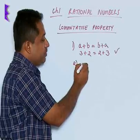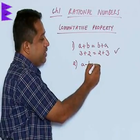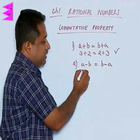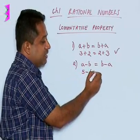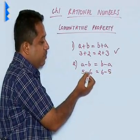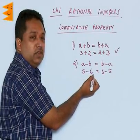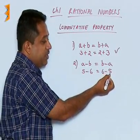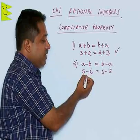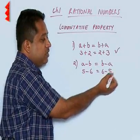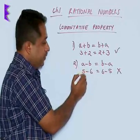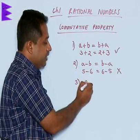If we look at the case of subtraction, is A minus B the same as B minus A? Let us take the example: is 5 minus 6 the same as 6 minus 5? The answer is no, because 5 minus 6 gives minus 1, whereas 6 minus 5 gives positive 1. So, commutative property does not hold good in case of subtraction.